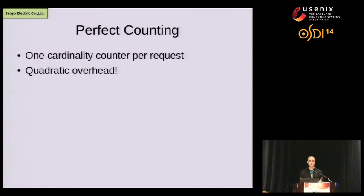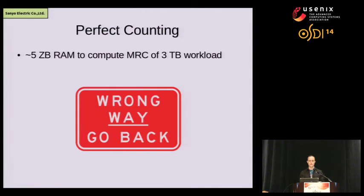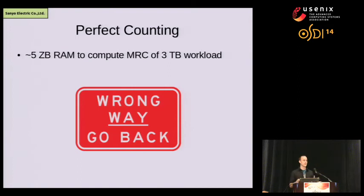The algorithm as described maintains one cardinality counter per request in your workload, which is quadratic overhead — extremely expensive. A rough calculation showed it would take something like five zettabytes of RAM to use this method to compute the MRC of the MSR traces.